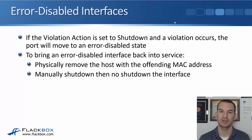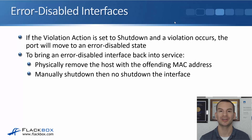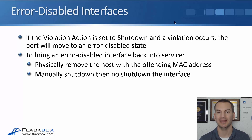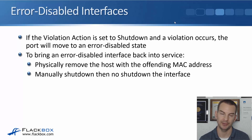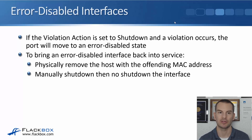If the violation action is left at the default shutdown and a violation occurs — like more than one MAC address tries to transmit on the interface — the port will move into an error-disabled state and the port is down. To bring an error-disabled interface back into service, first remove the offending MAC addresses that were causing the problem. After that, you need to do a shutdown and then a no shutdown on the interface — that's how you bring it back into service. Doing it that way is manual.